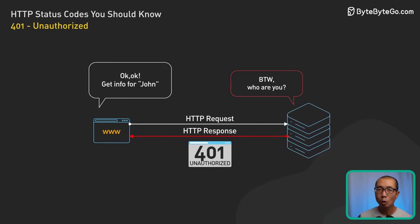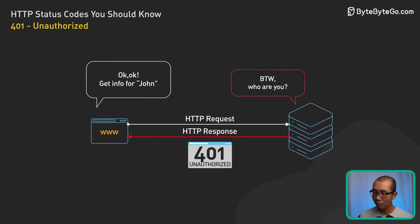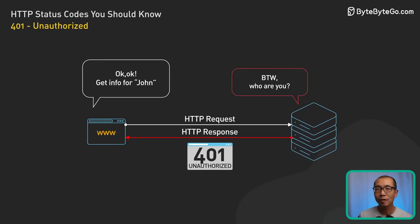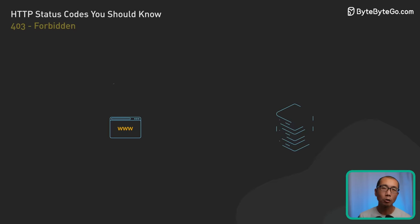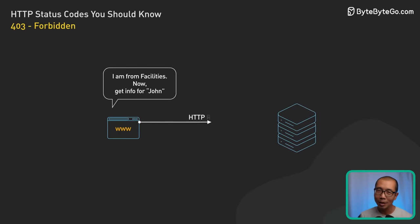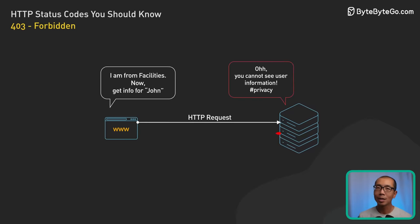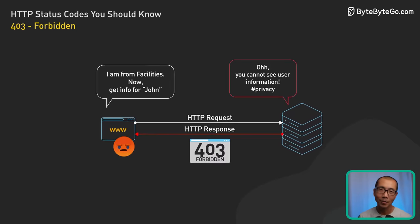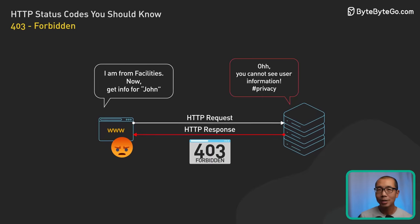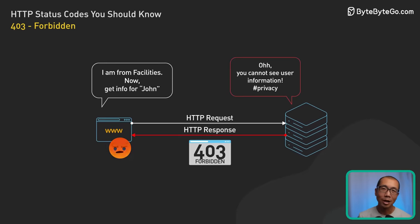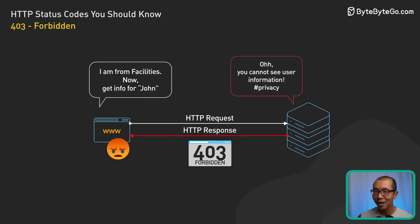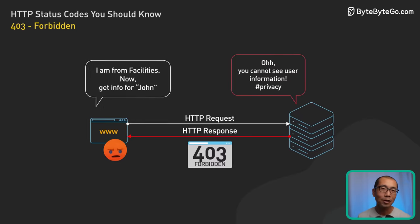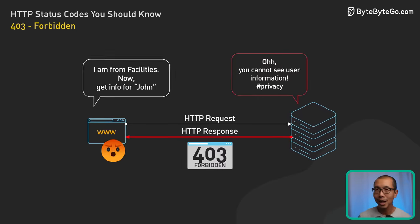The door won't open until the right key — or in our case, the right authentication token — is provided. Then we have 403 Forbidden. This one is a bit more personal; it means I know you, but you can't come in here. Imagine having a general ticket to a concert but trying to sneak into the VIP section — it's like trying to access admin features with a guest account.